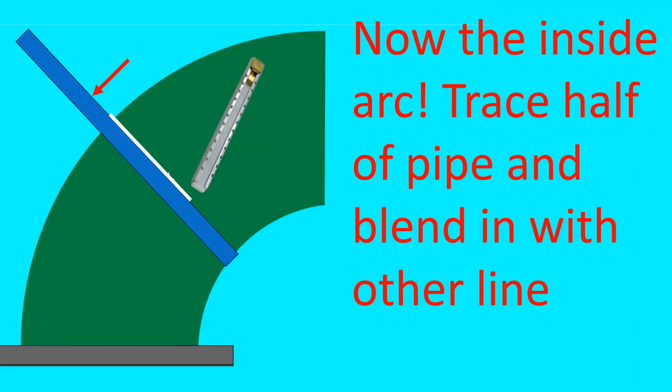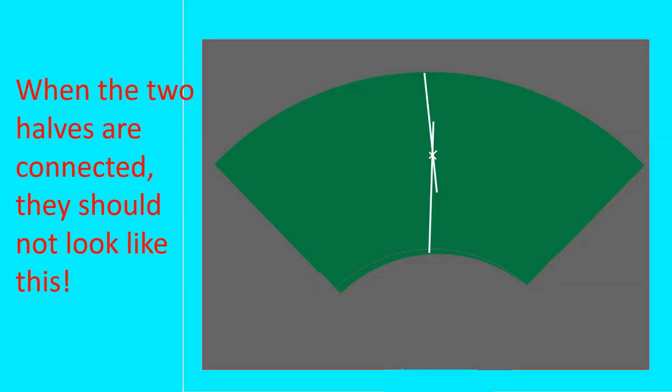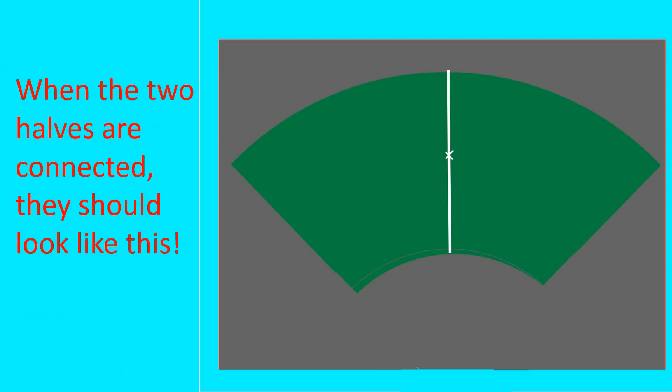Now the inside arc. Trace half of the pipe and blend in with the other line. Squeeze together with fingers here. When the two halves are connected, they should not look like this. That's not acceptable. When the two halves are connected, they should look like this, a straight line.